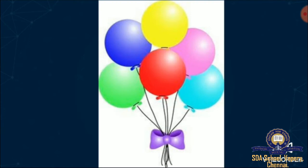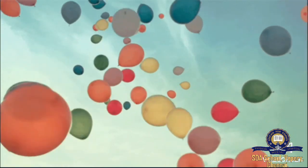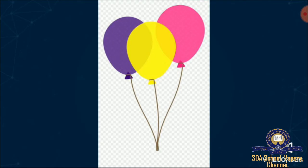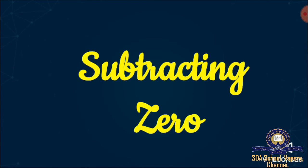Now the third example: balloons. See how many balloons are here. We count: one, two, three, four, five, six — totally six balloons. In those six balloons, we are going to take some away. We are going to take three balloons from that bunch. So at the end, how many will be left? Six minus three will be three. If you reduce three balloons from six, the answer will be three. This is how subtraction works.